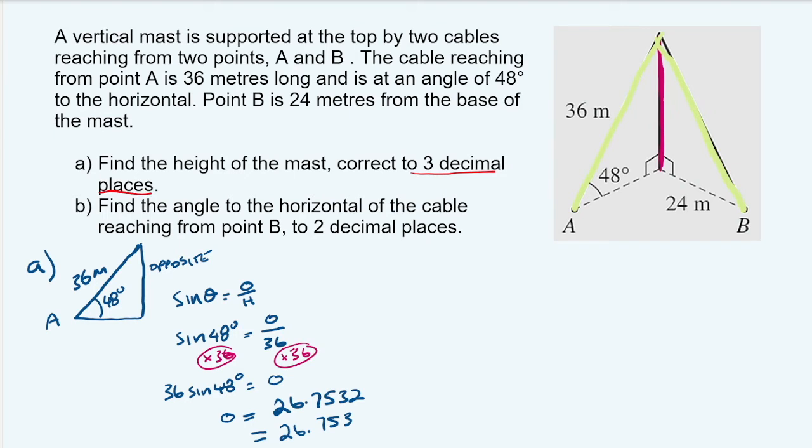Or 26.753 correct to three decimal places. So always make sure you are rounding to the correct number of decimal places. And if you check it, because that next number is a two, below halfway, we stay the same.